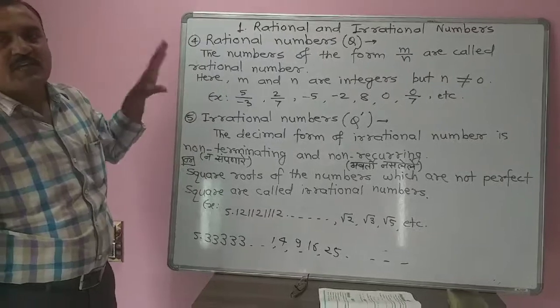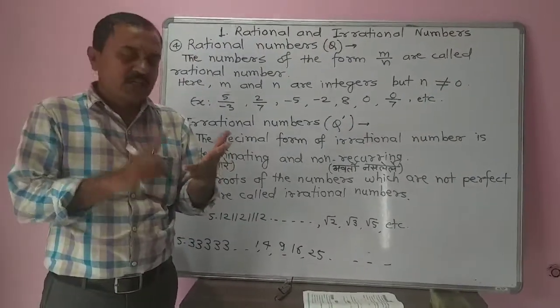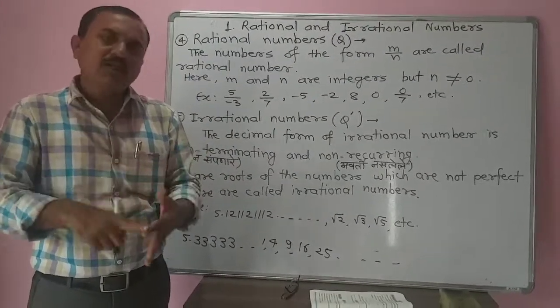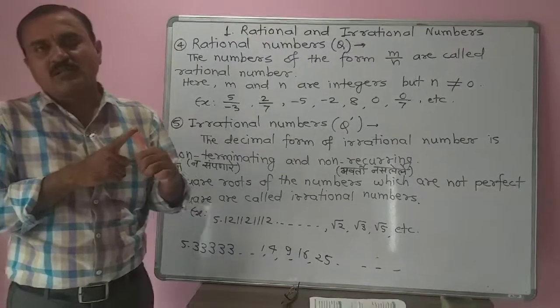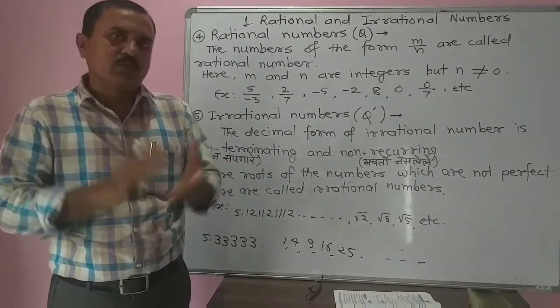So here we see rational and irrational, the total number family: natural numbers, whole numbers, integers, rational numbers, and irrational numbers. Okay? We will learn more next period.